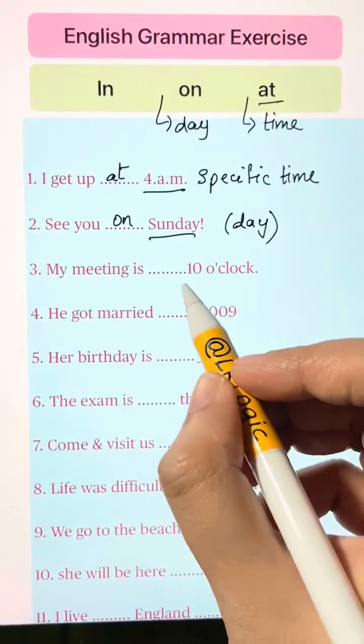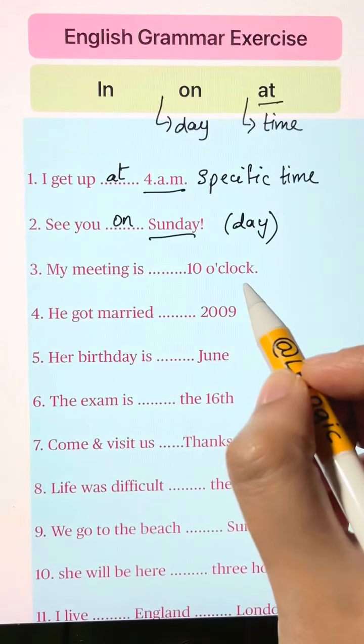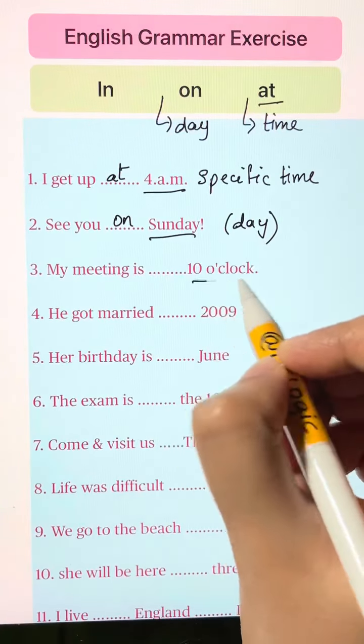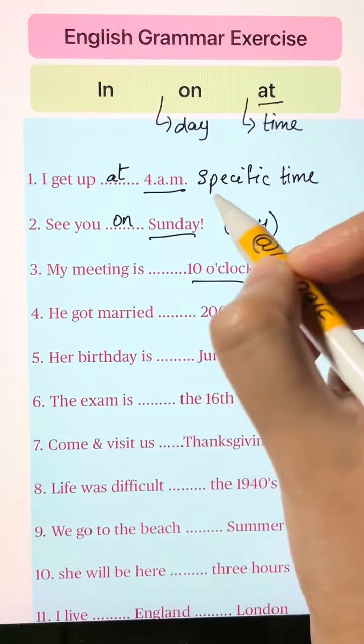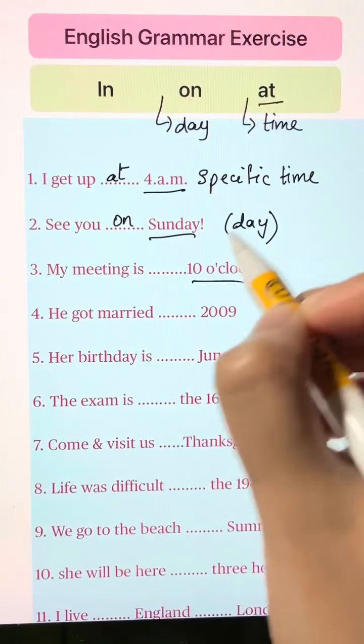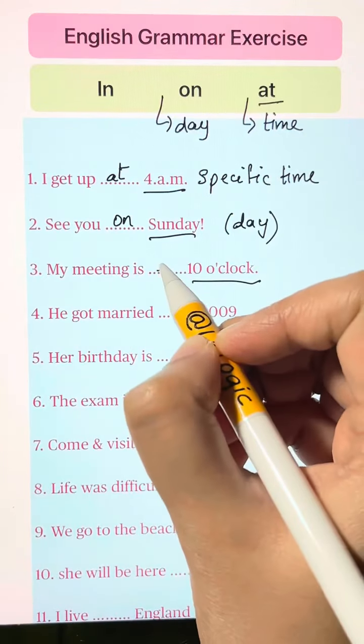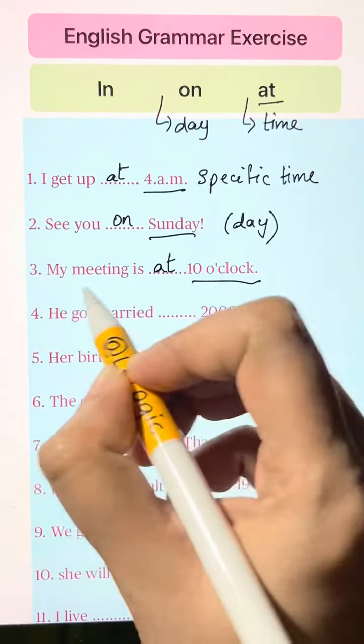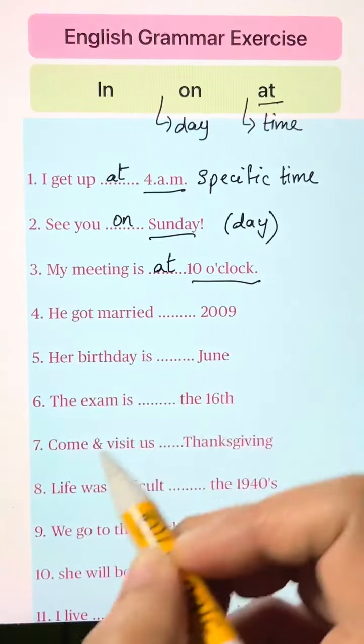My meeting is blank 10 o'clock. So what's this? It's a specific time, so we use 'at.' My meeting is at 10 o'clock.